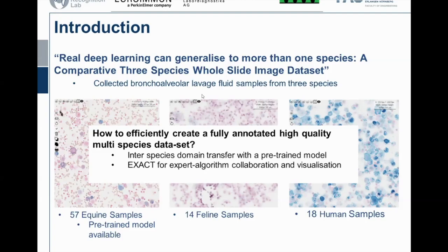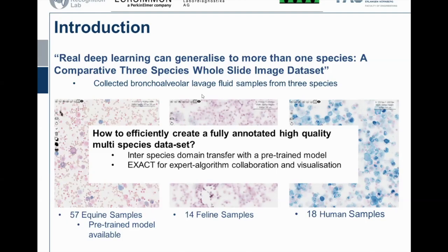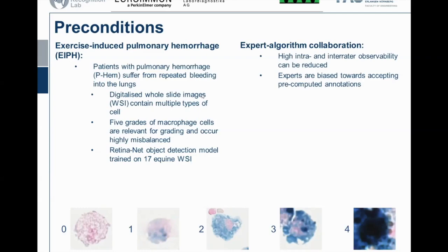Let's go a little deeper into our preconditions. We have a network trained on 17 of these whole slide images. At the bottom you can see the classes — class zero to four — depending on the hemosiderine concentration. Our disease is caused by bleeding into the lung; we take a sample, digitalize it, and assess how severe the bleeding is. That was our first publication.